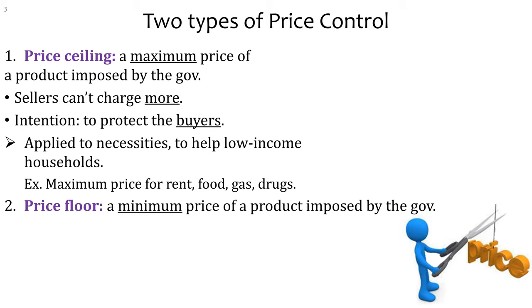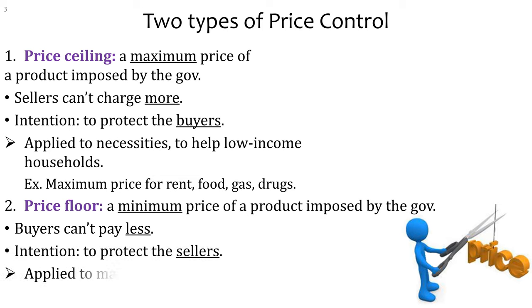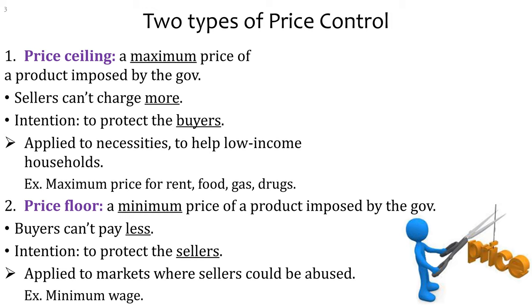In the case of the price floor, we have the opposite — this is something that buyers can't pay less for. The purpose here is probably to make sure the sellers are not abused. The intention is to protect the sellers, applied to markets where sellers could be abused. The best example is minimum wage, where wage is the price of labor and workers are selling their labor, so we want to protect the laborers.